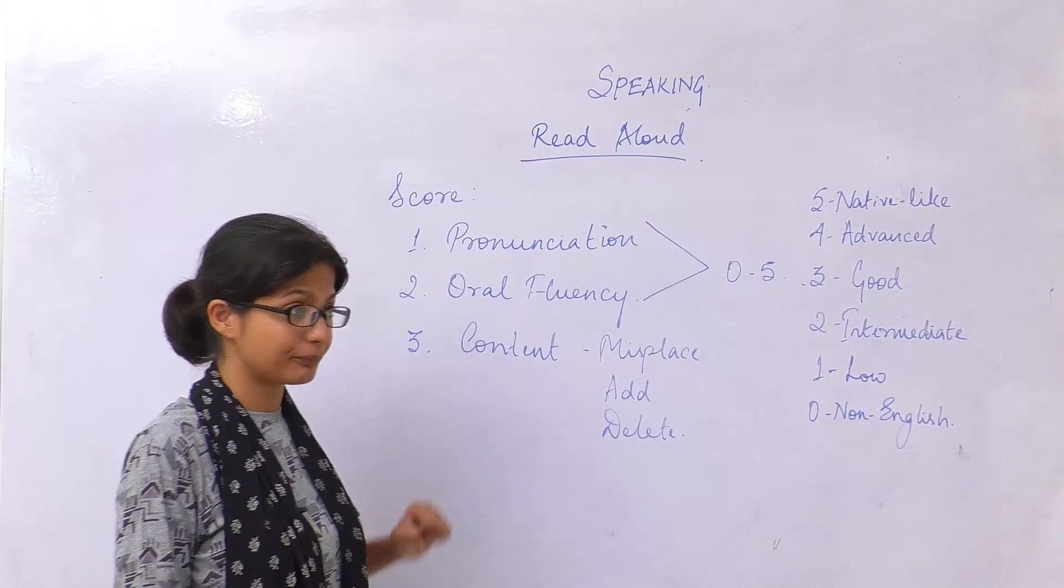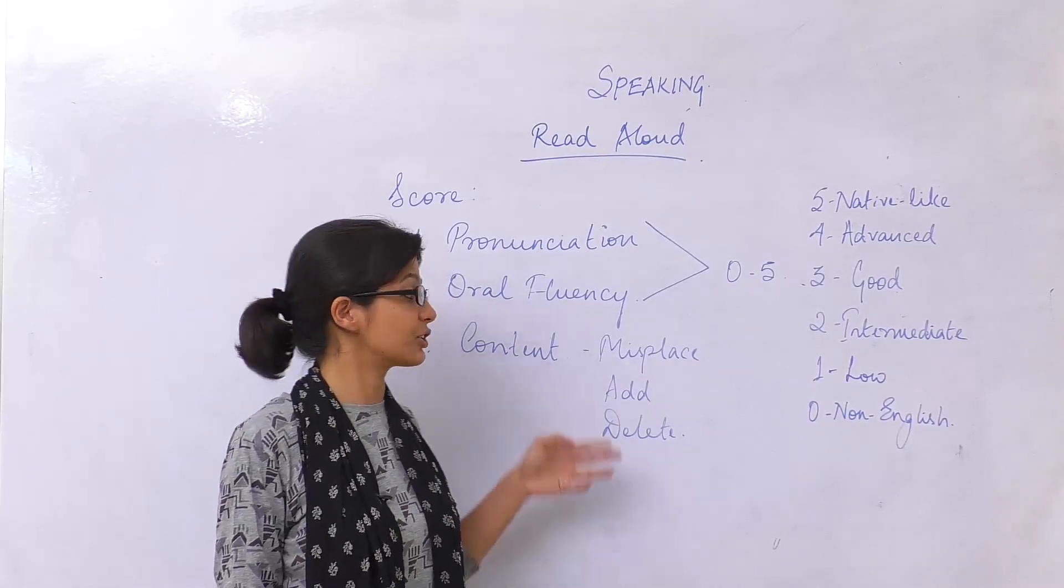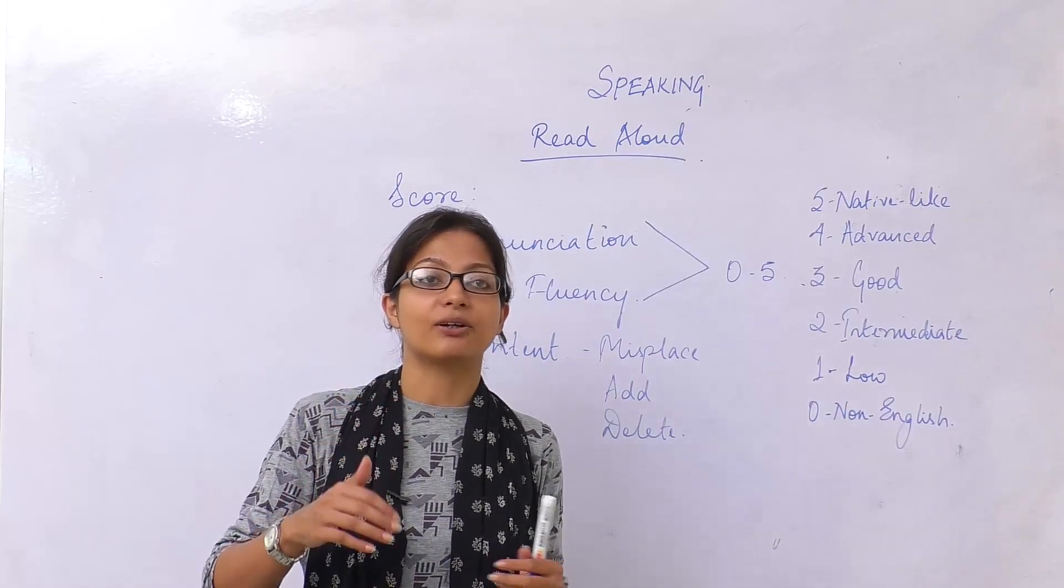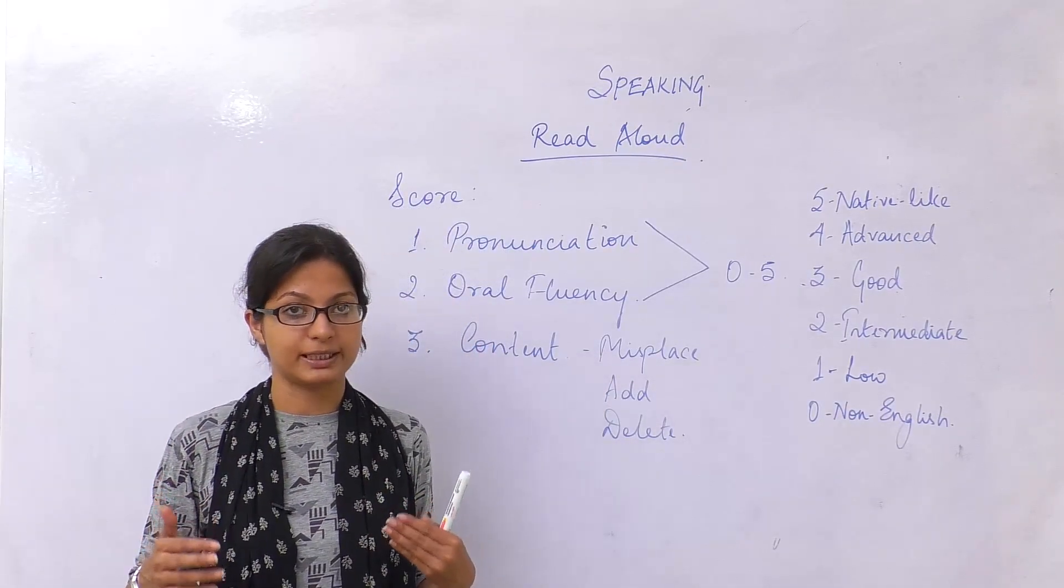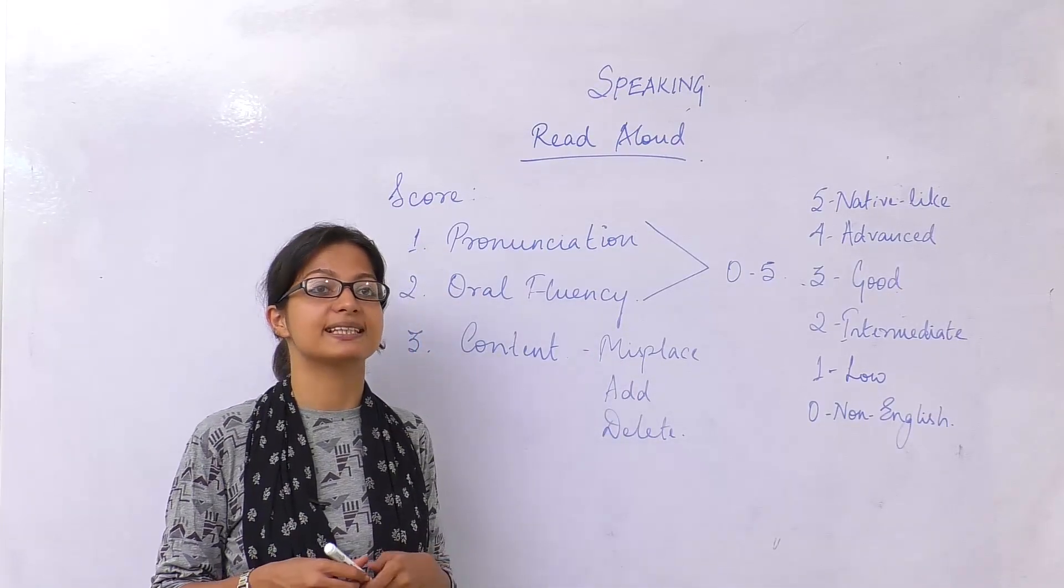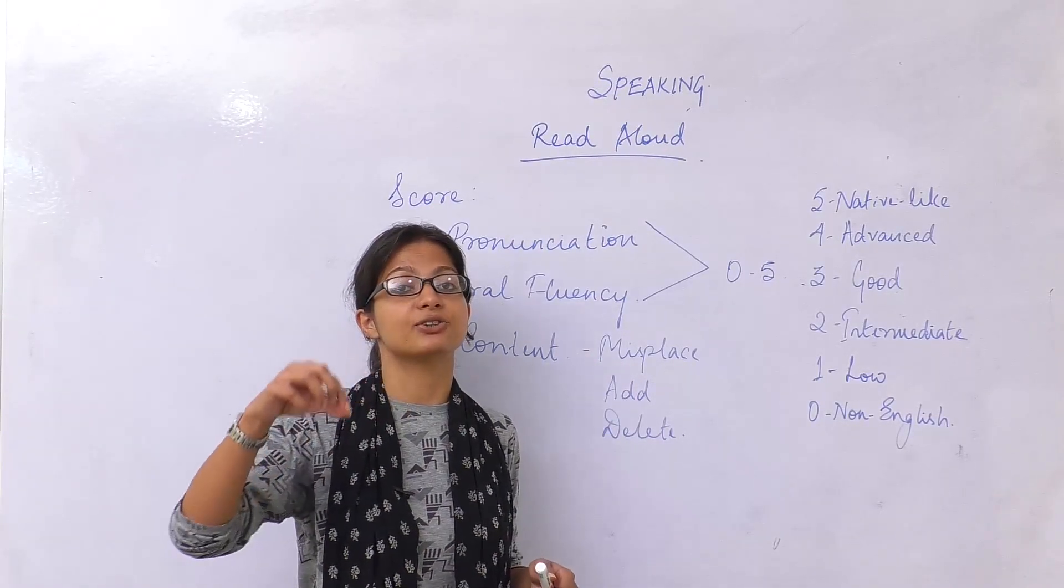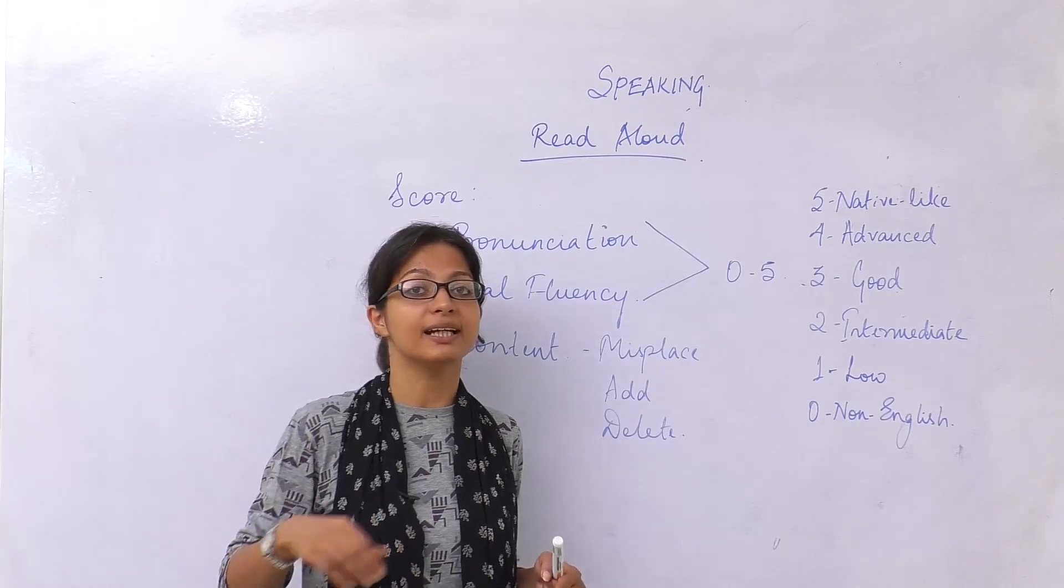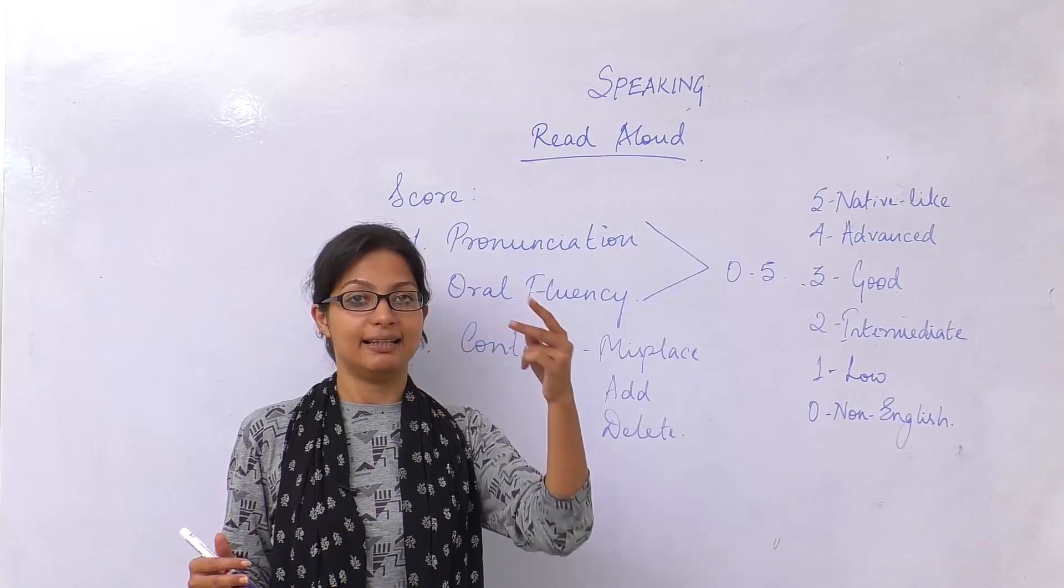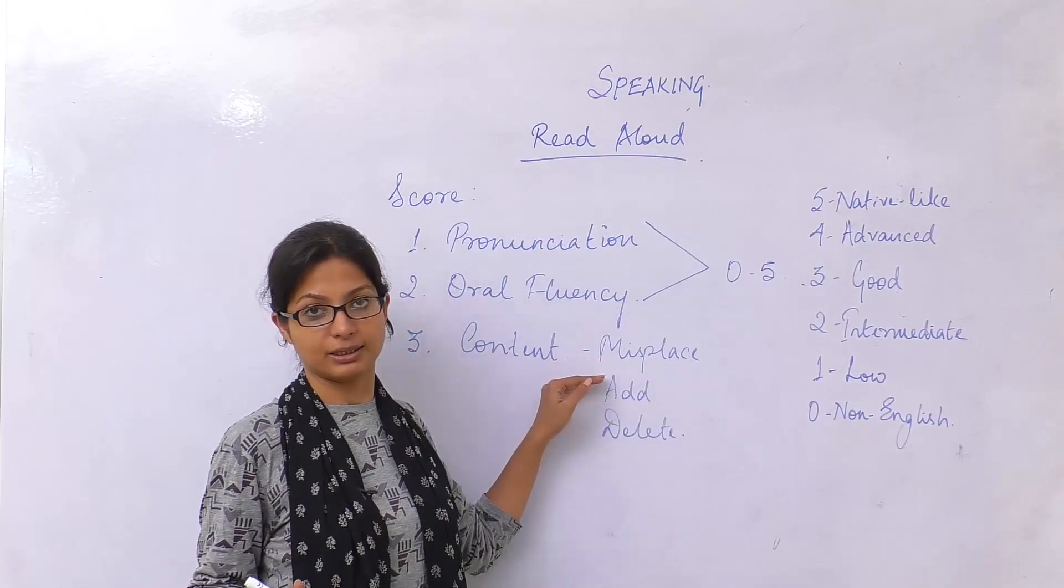Now coming to content. Content is judged in three ways. One, if you misplace or replace a word within the sentence, you lose your marks. For example, if the sentence is 'smoking is injurious to health' and you say 'smoking is injurious to wealth,' you replace health with wealth and you lose marks.